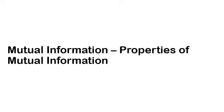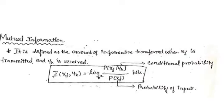In general, the mutual information of two random variables is defined as the measure of mutual dependencies between two variables. Let us see the definition.